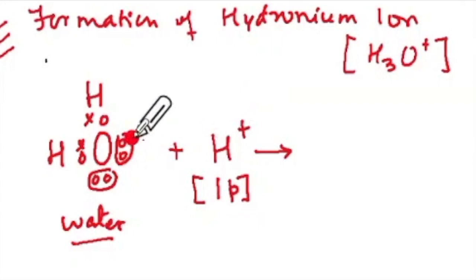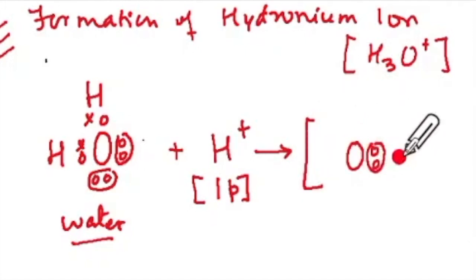So we have oxygen with these two electrons. Can you see this? This is given to the hydrogen. Can you see that?